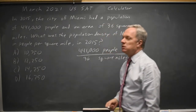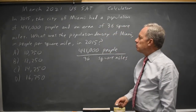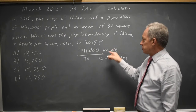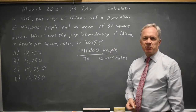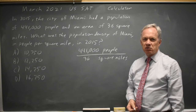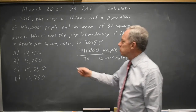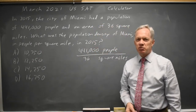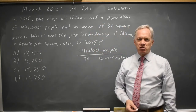In general, in math and science, people per square mile would be people divided by square miles. Miles per hour would be miles divided by hours. Feet per second means feet divided by seconds. So you translate 'per' into 'divide by' when you're going from a paragraph to an expression or an equation.